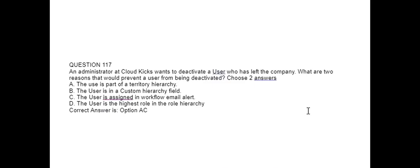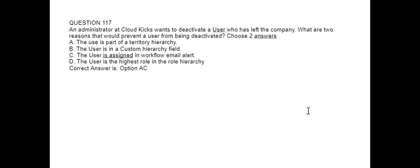Next question. An administrator at Cloud Kicks wants to deactivate a user who has left the company. What are two reasons that would prevent a user from being deactivated? Option A: The user is part of a territory hierarchy. Option B: The user is in a custom hierarchy field. Option C: The user is assigned in a workflow email alert. Option D: The user is the highest role in the role hierarchy. Correct answer is Option A and Option C.